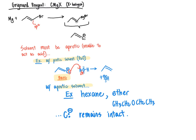So instead, you do this in an aprotic solvent using things like hexane or ether or other things that have carbon-hydrogen bonds exclusively with no hydrogens that are bonded to heteroatoms. So the carbanion remains intact because your protic solvents are going to be things that have